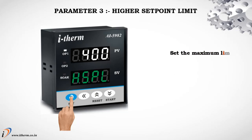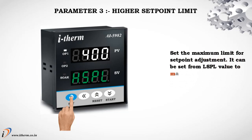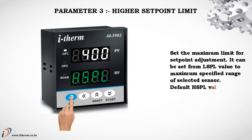Parameter 3: Higher Set Point Limit (HSPL). Set the maximum limit for set point adjustment. It can be set from the LSPL value to the maximum specified range of the selected sensor. Default HSPL value is 400.